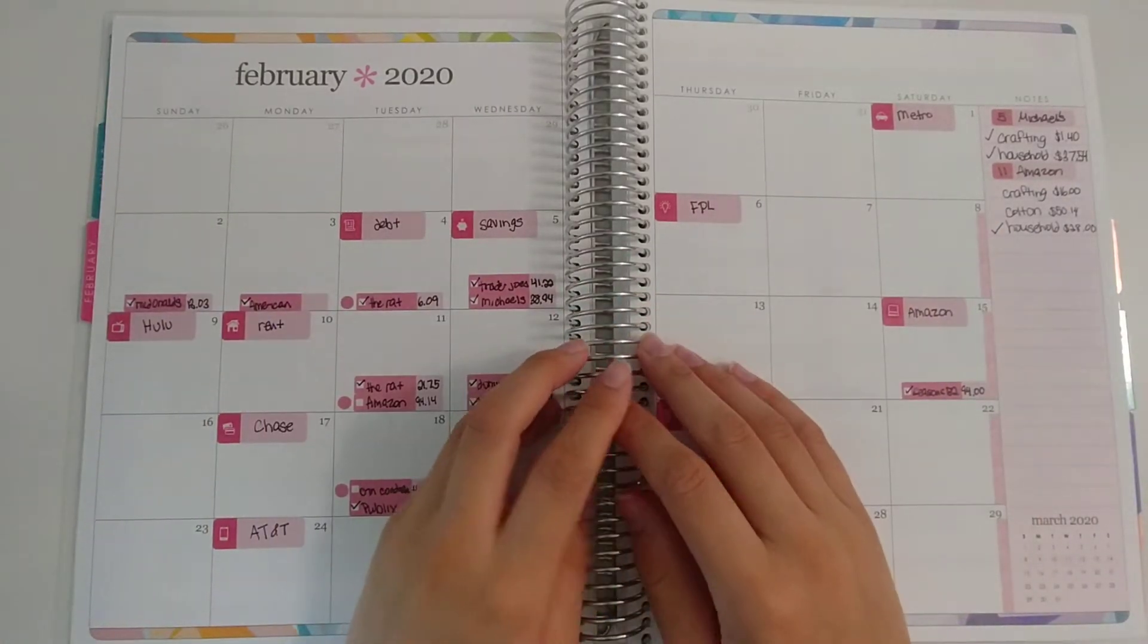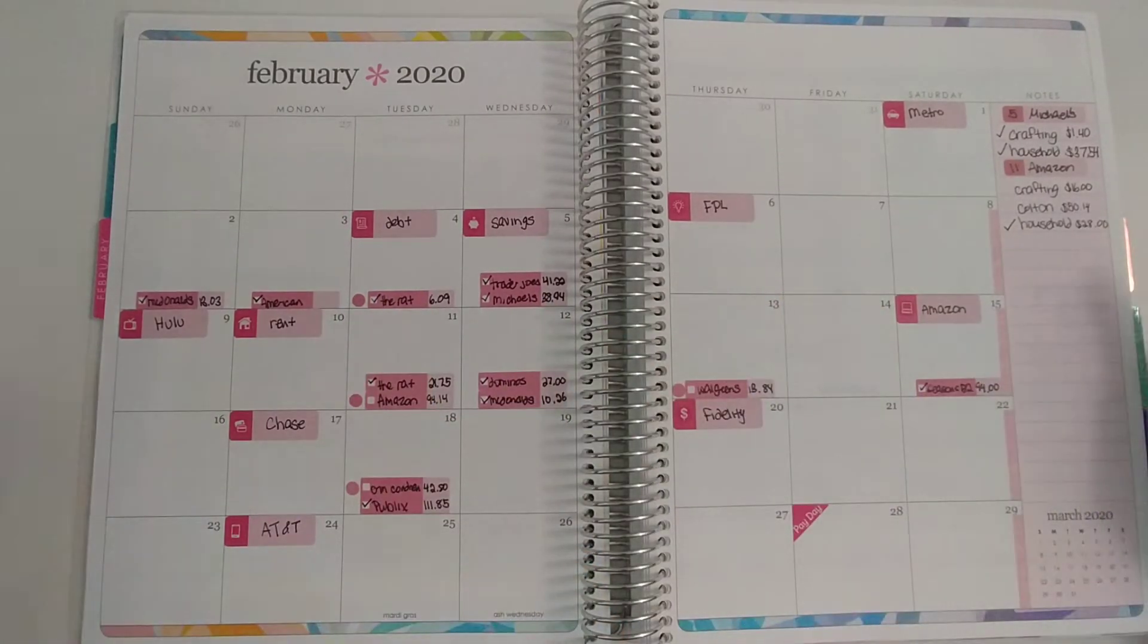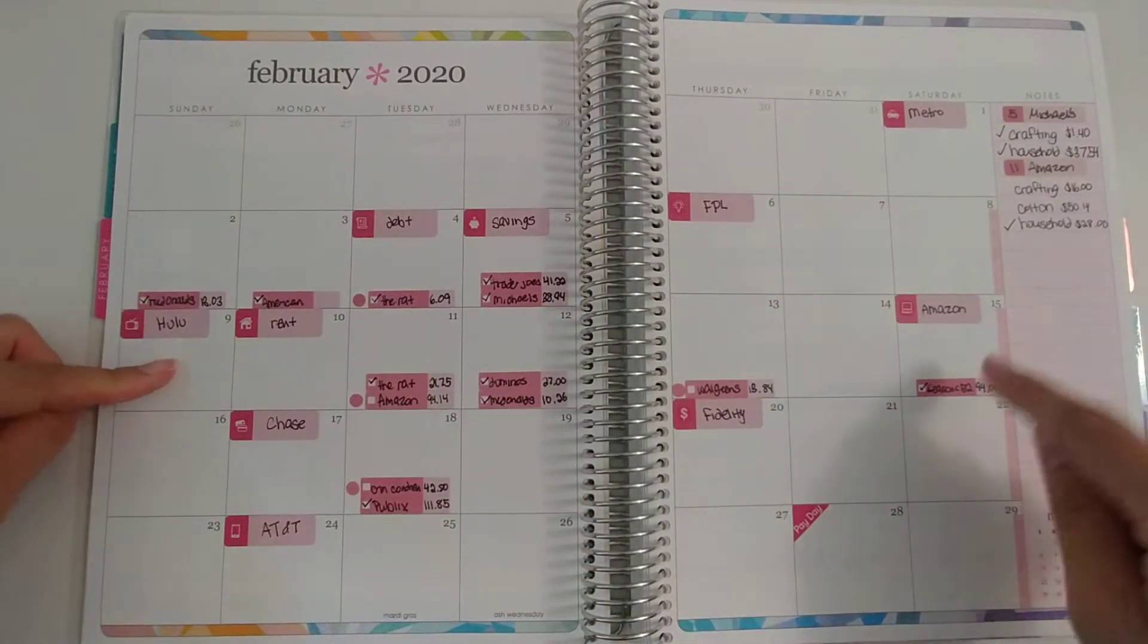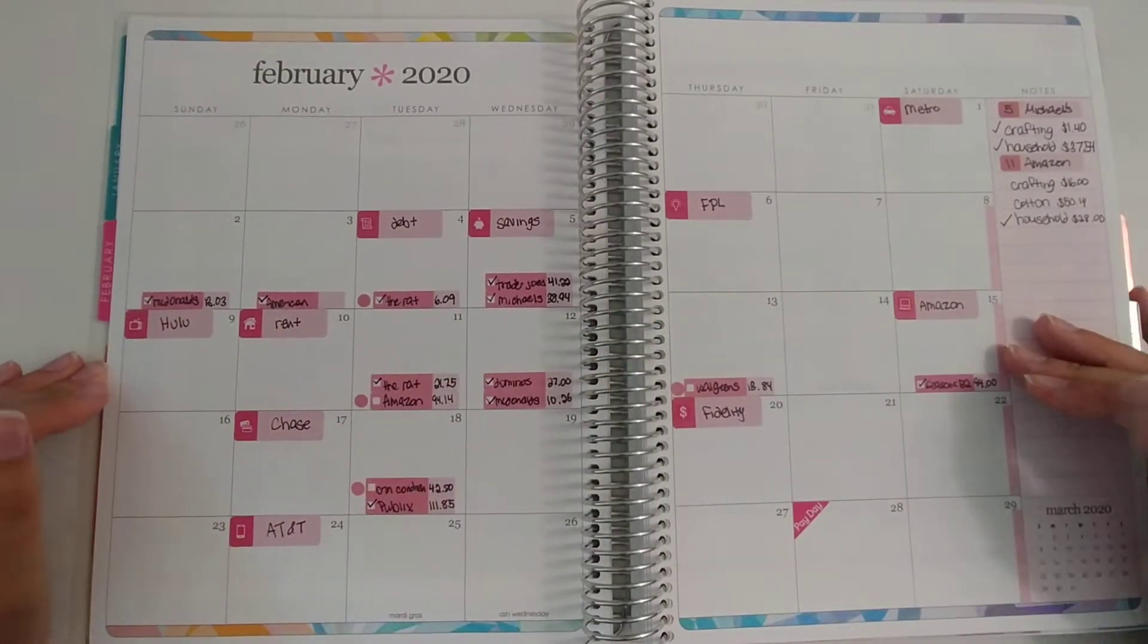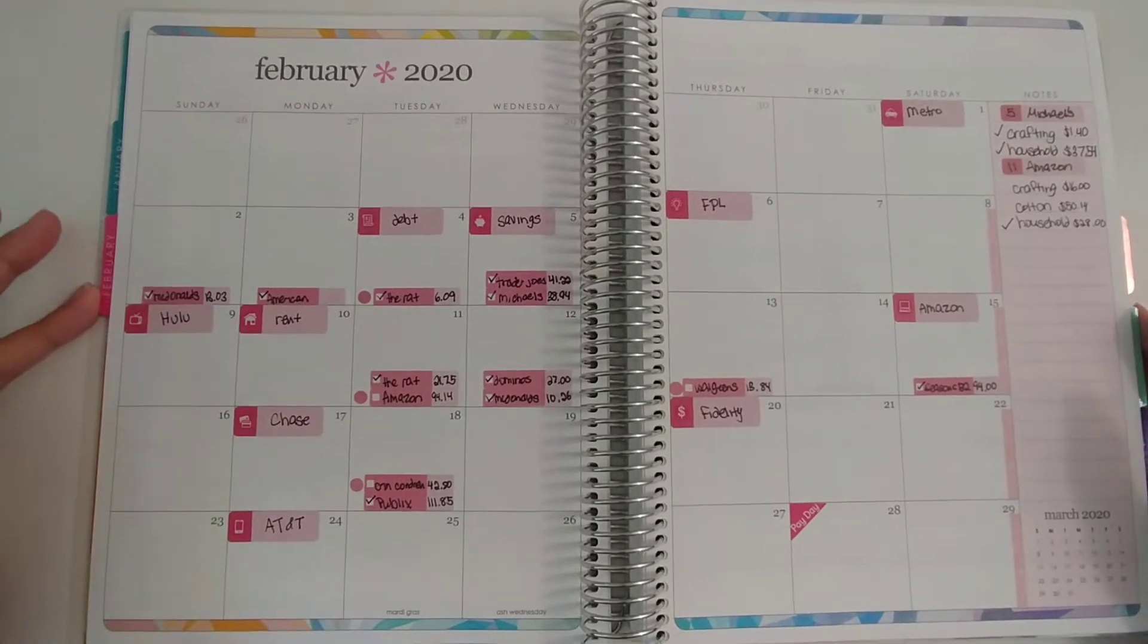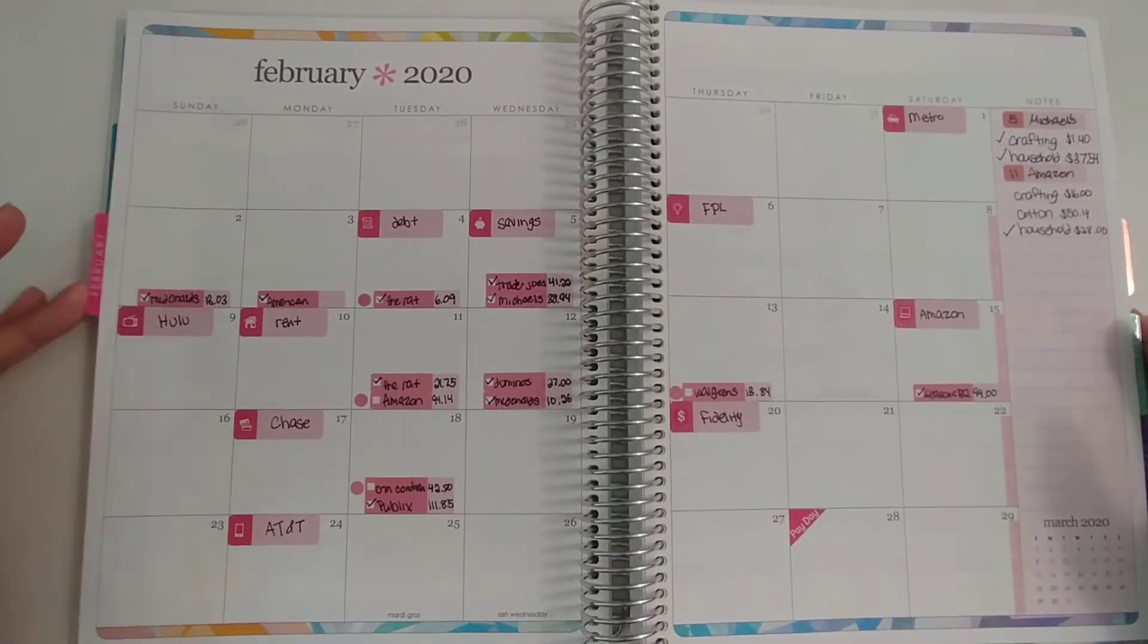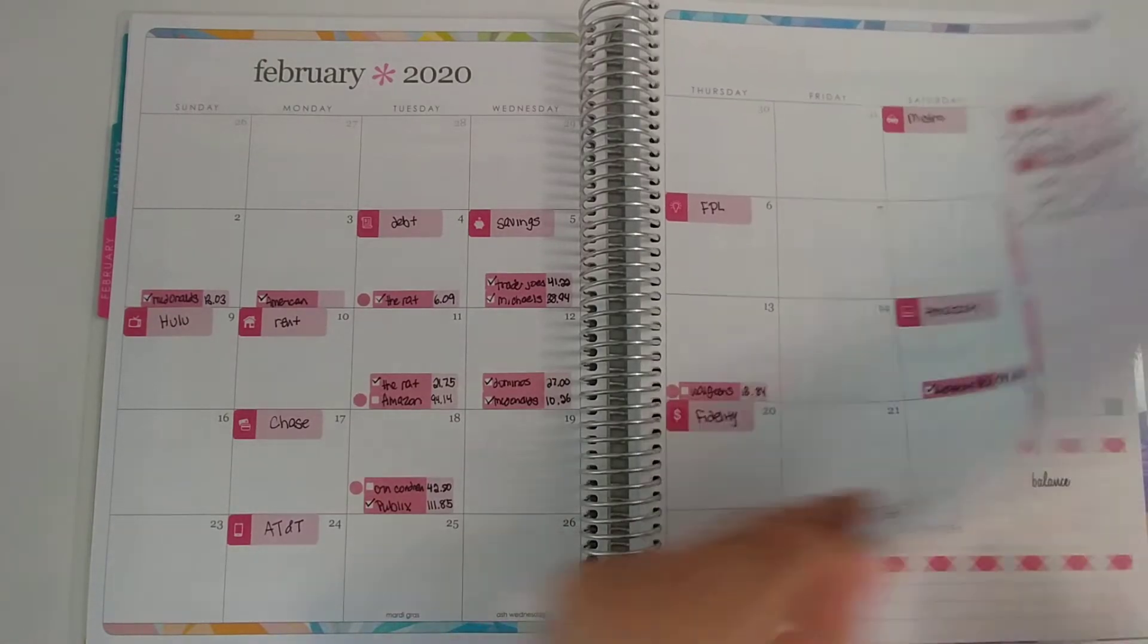Hello everyone and welcome back to my channel. Today I will be doing the week two check-in for the month of February, from the 9th to the 15th. As you can see, not many things have been going on. Over half of it has been checked already, and the check marks mean that it was already recorded in my joint planner, which I'll show you in a second. Let's go ahead and get started here.